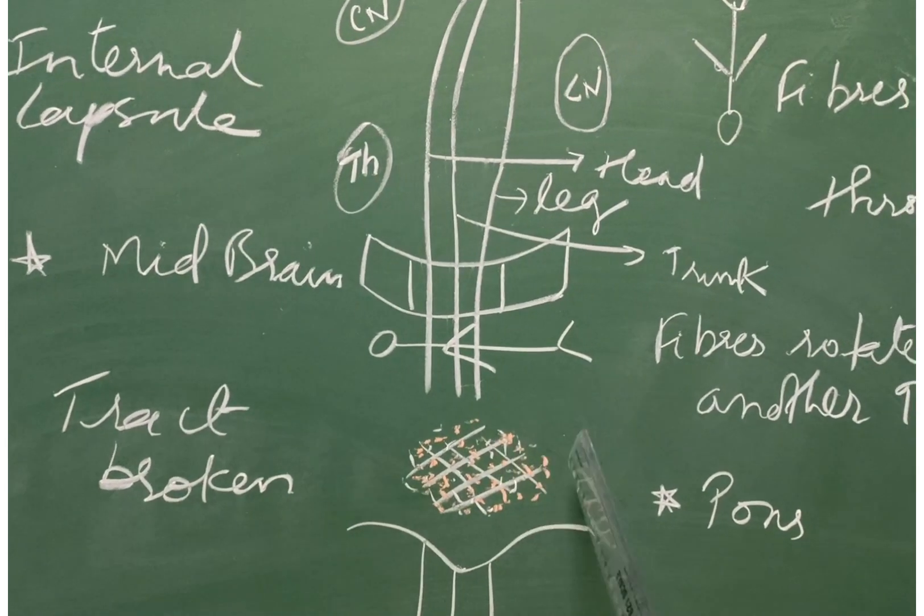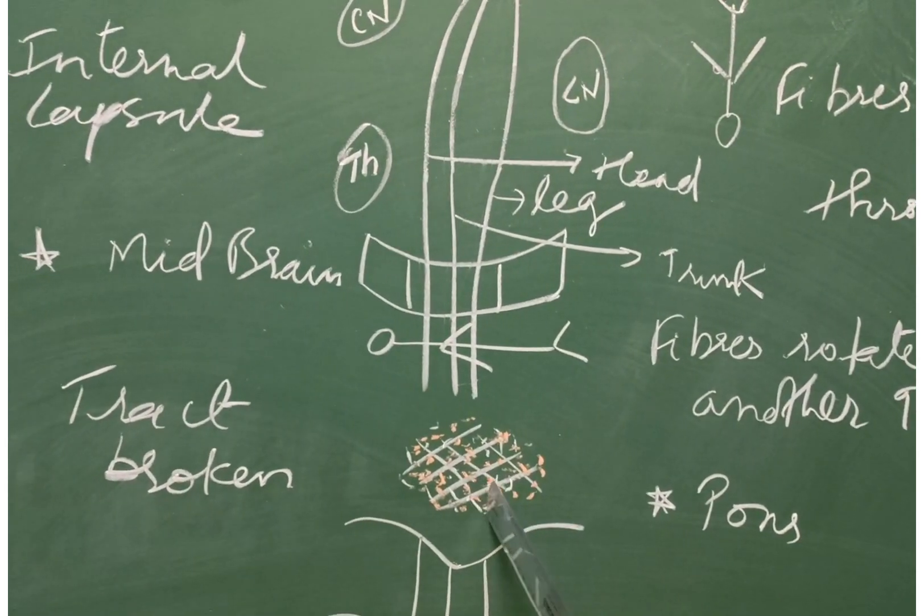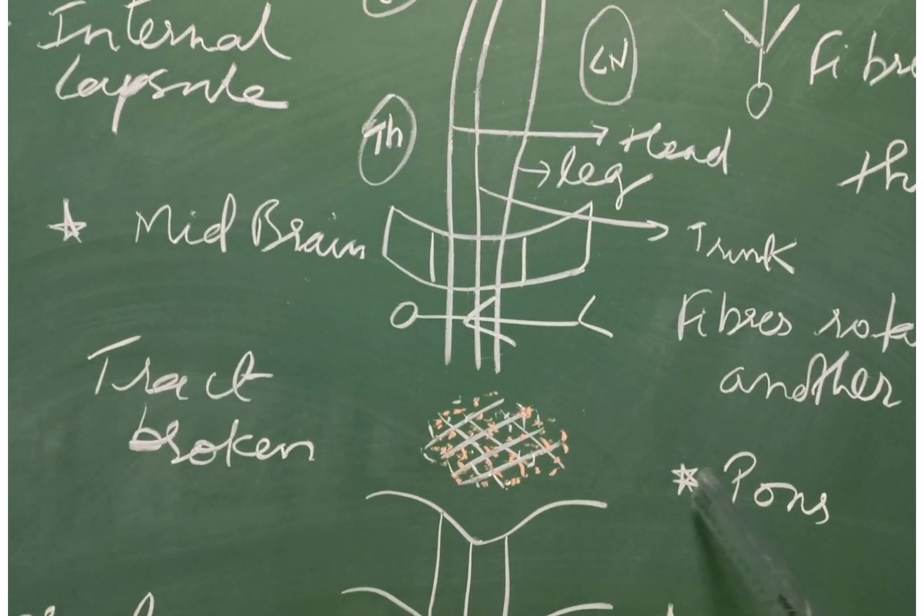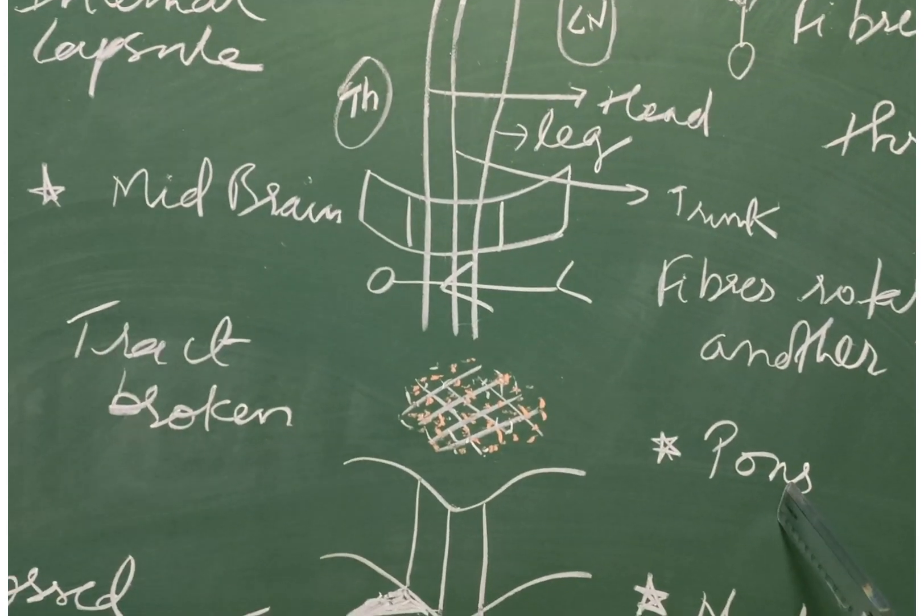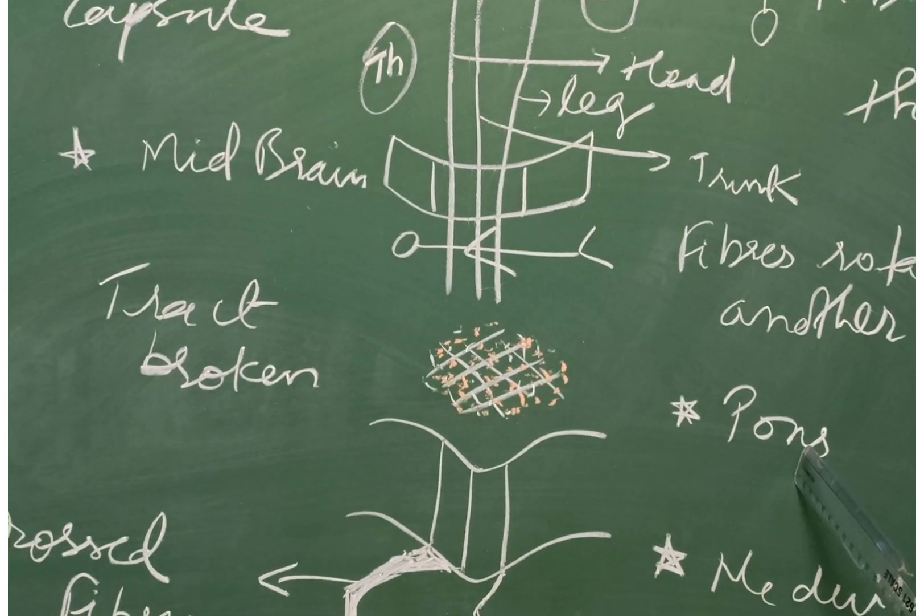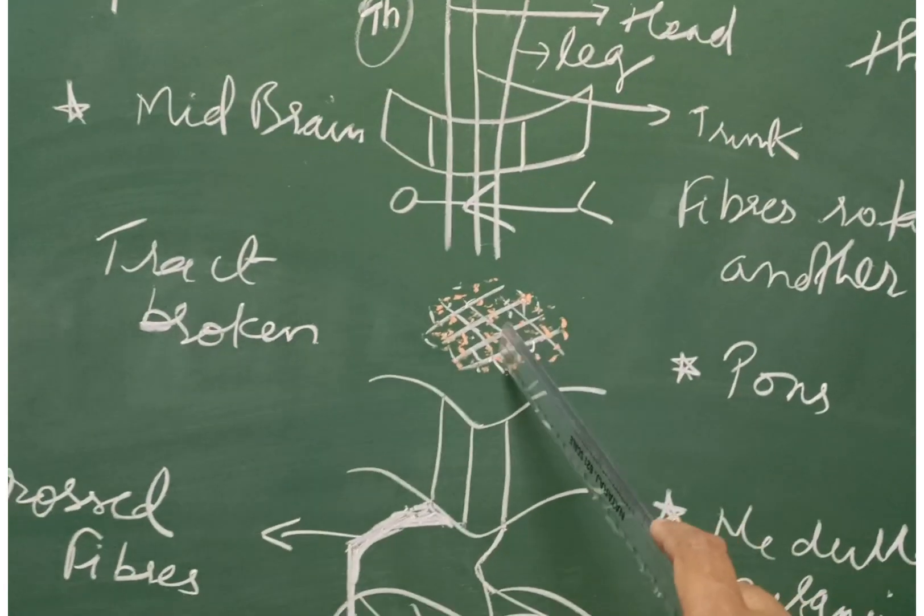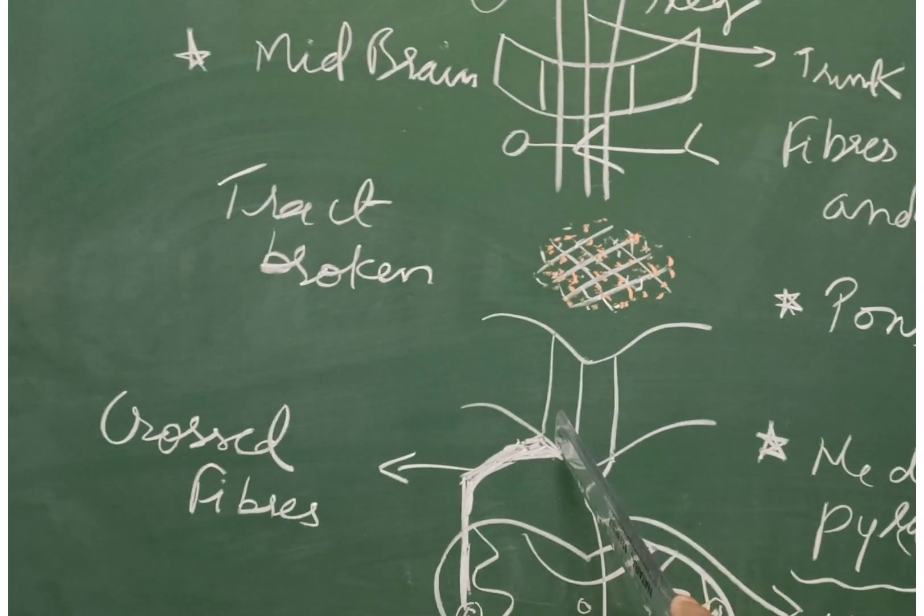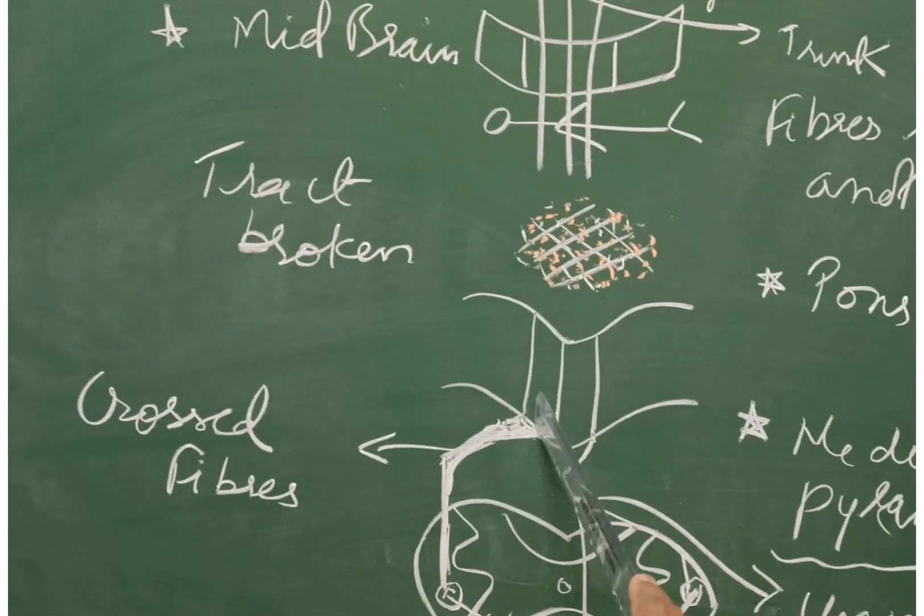While descending to the pons, the tract is broken up into several bundles. In the lower part of the pons, they get collected again and form a single compact bundle.